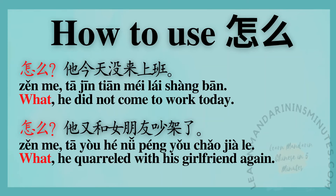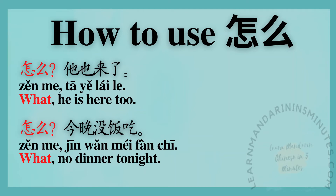怎么,他又和女朋友吵架了? — What? He quarreled with his girlfriend again. 怎么,他也来了? — What? He's here too. 怎么,今晚没饭吃? — What? No dinner tonight.